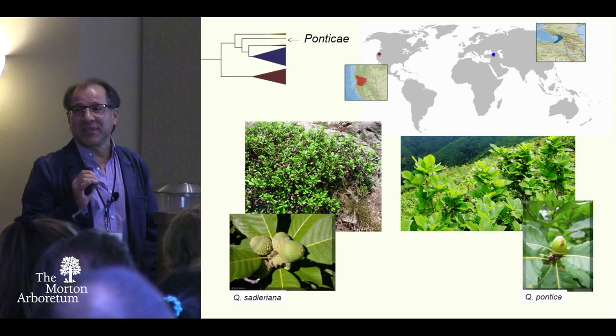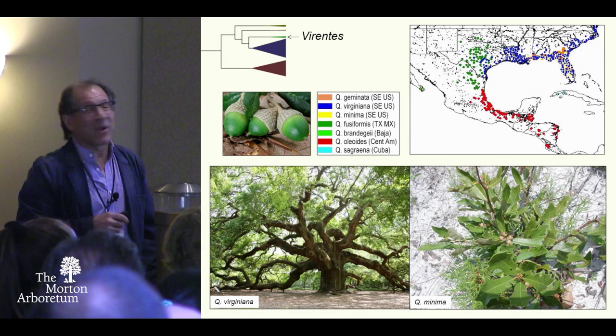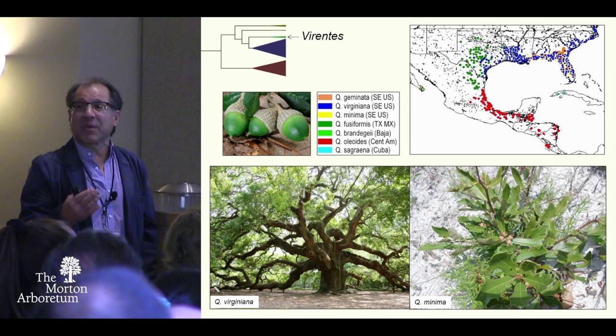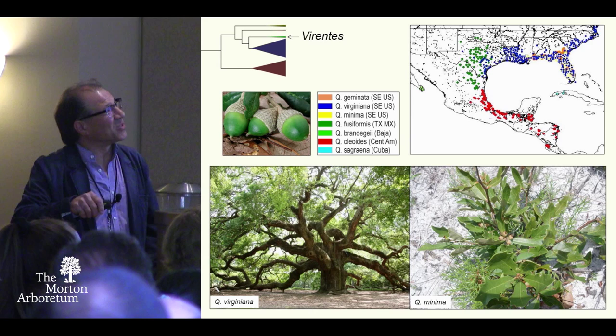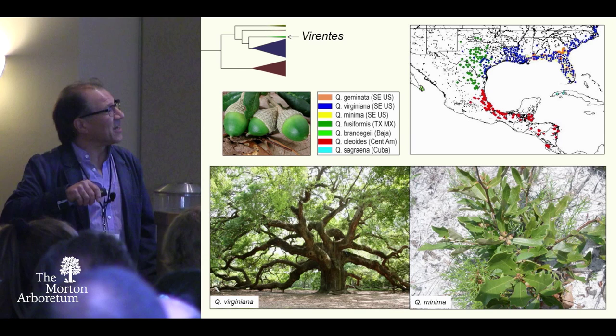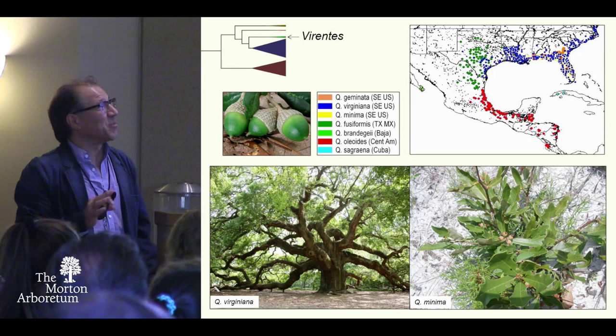Virentes is the next branch — the closest relatives of the white oaks. Trelease thought they were nested within the white oaks, but it seems they're outside and are the closest relatives of the white oaks. Their distribution is really interesting as well, trickling all the way down into Central America. Quercus virginiana, and Quercus minima — one of my favorites — found on sand as a low-growing rhizomatous plant. These are the seven species of Virentes.